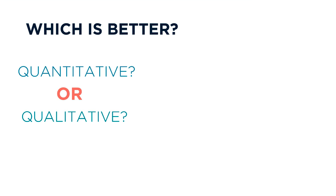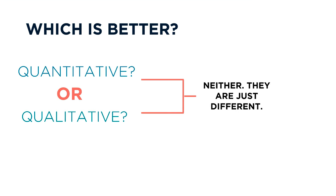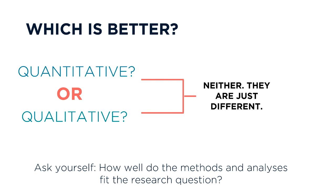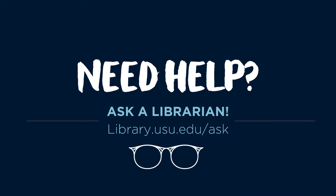So, what makes a better empirical study? Quantitative studies aren't automatically better or worse than qualitative studies — these two approaches are just different. Sometimes researchers even combine approaches to present a fuller picture through a mixed methods study. When you're evaluating a study's approach, ask yourself: how well do the methods and analyses fit the research question? If you need help with quantitative, qualitative, and mixed methods studies, you can always ask a librarian.